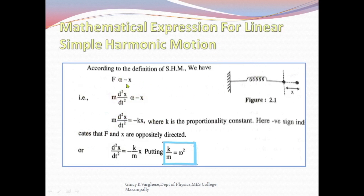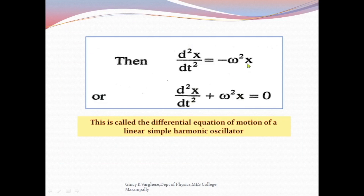Mathematically, simple harmonic motion is expressed as F ∝ −X. In differential form, this is written as M·(d²X/dt²) ∝ −X. Introducing a proportionality constant K, we get M·(d²X/dt²) = −KX. Taking M to the right-hand side, the equation becomes d²X/dt² = −(K/M)X. Putting K/M = ω², the equation becomes d²X/dt² = −ω²X, or rearranging: d²X/dt² + ω²X = 0. This is called the differential equation of motion of a linear simple harmonic oscillator.